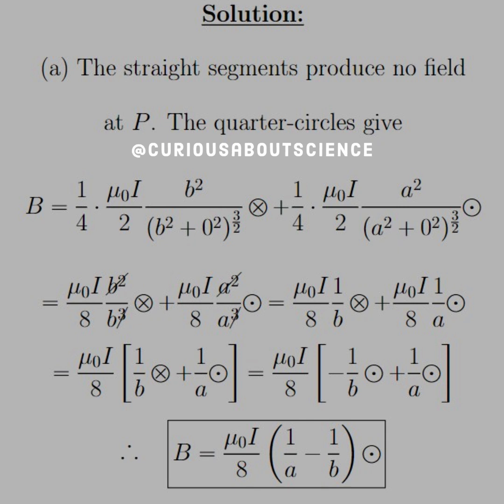And then note that when we do the right-hand rule for radius B, that goes into the page. The field goes into the page at P, but for at radius A, the field goes out of the page at P.